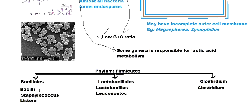Some important members of Bacillus include Bacillus thuringiensis, whose genetic material has been studied extensively and has been incorporated into some plants to make them resistant to pests. Another important species is Bacillus anthracis, which is responsible for causing the disease anthrax in humans. Also, Bacillus amyloliquefaciens is responsible for producing many antibiotics and has industrial significance.